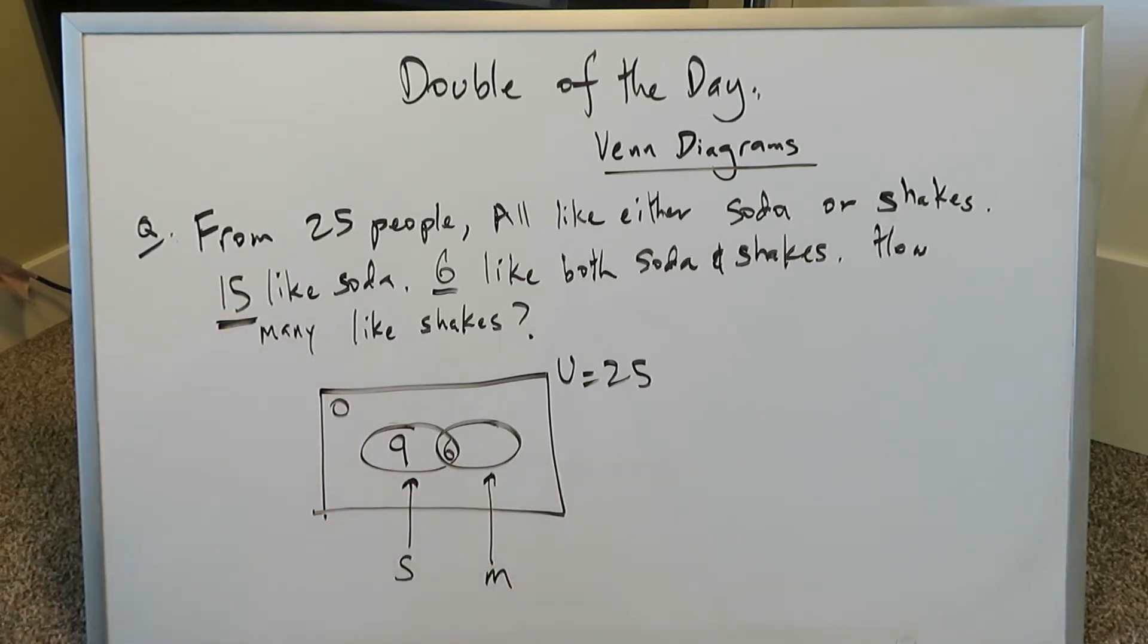What do we have left over here? We have 25 minus these 15 minus the 0 who don't apply, because there are no people in that category. We're left with a total of 10 over here who happen to like milkshakes, and you can bring that number right over here.